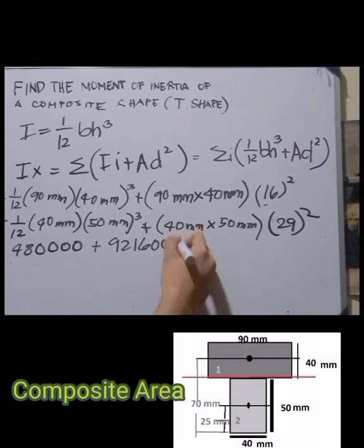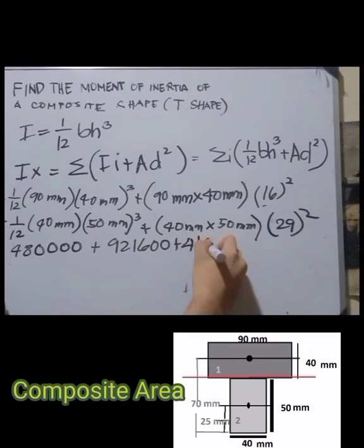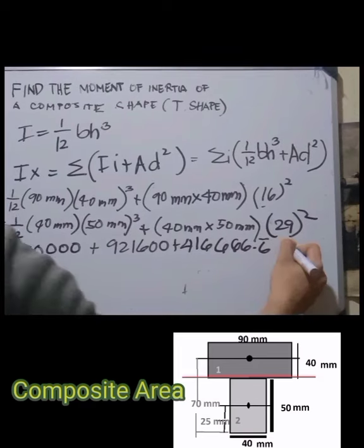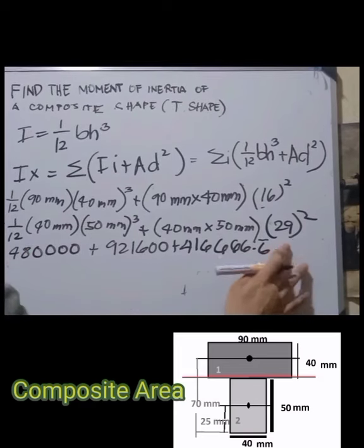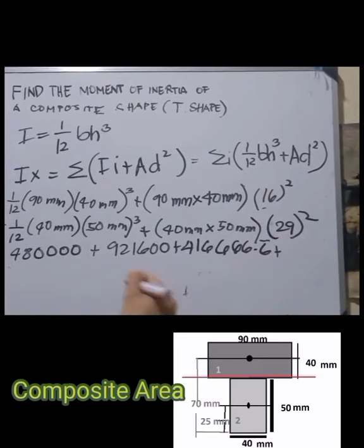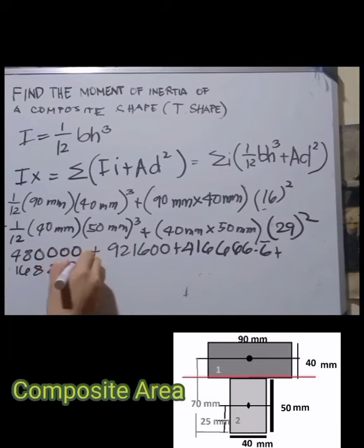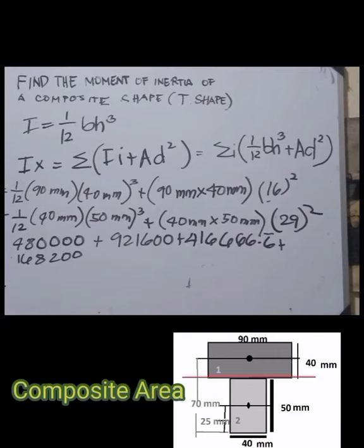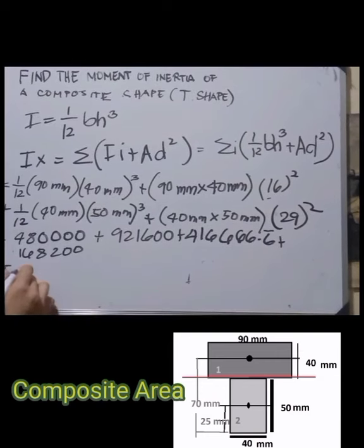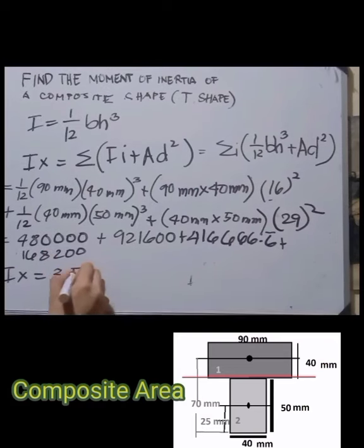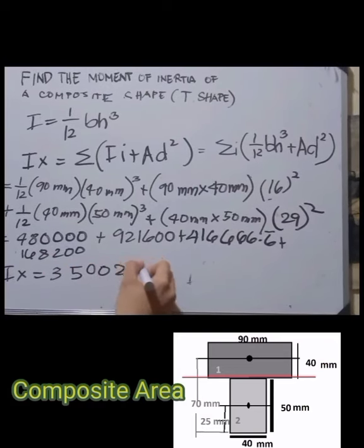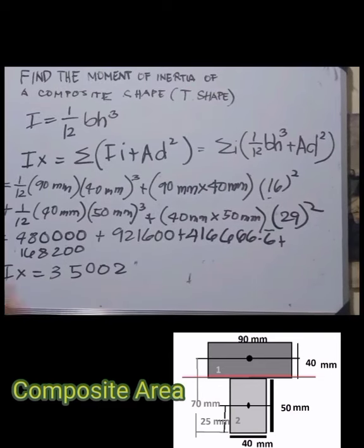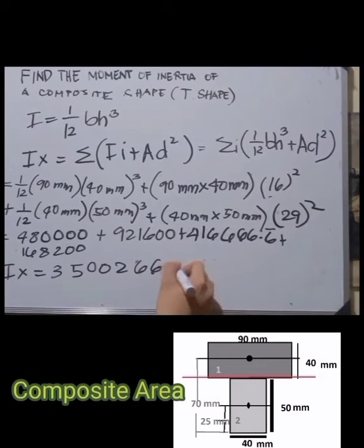The total is 480,000 + 221,600 + 416,666.67 + 168,200, giving Ix = 3,500,266.7 mm⁴.